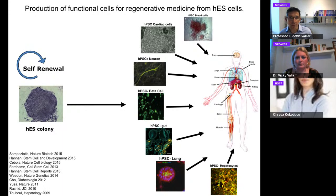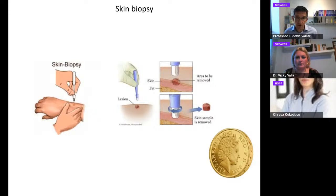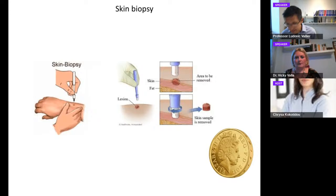iPSCs are also quite interesting because we can now derive them very efficiently from any patient or individual — patients with disease, patients with genetic disorders. We can get these cells by simply taking a bit of skin from those patients, reprogramming them into iPSCs, and then differentiating them into any cell type we want.